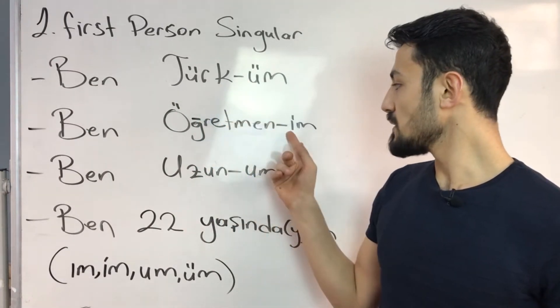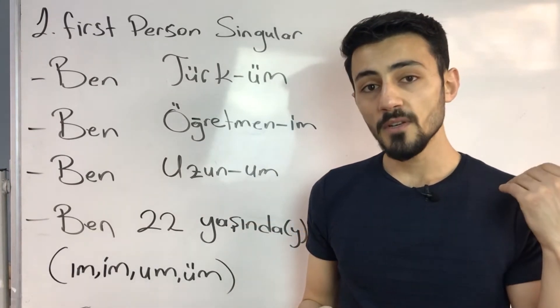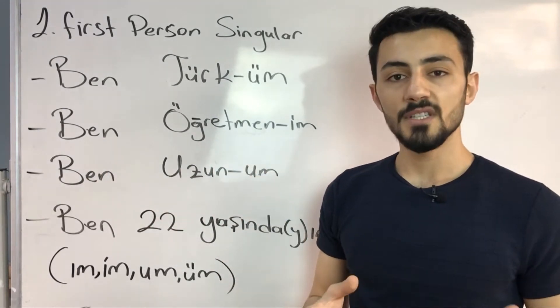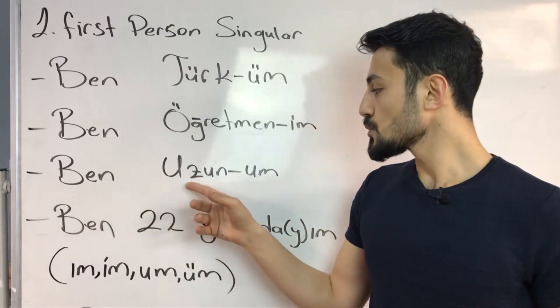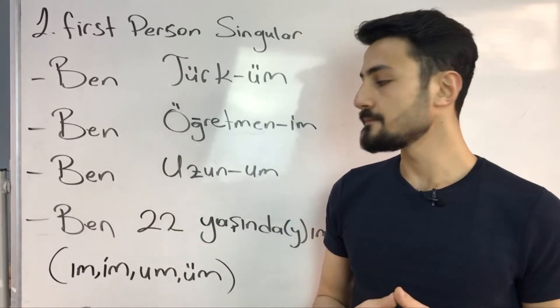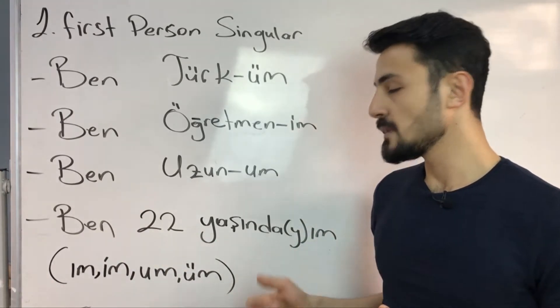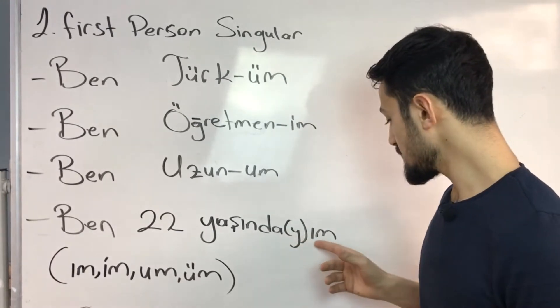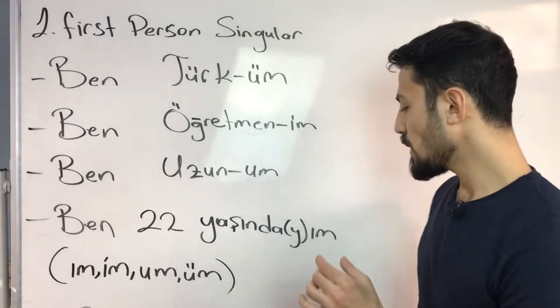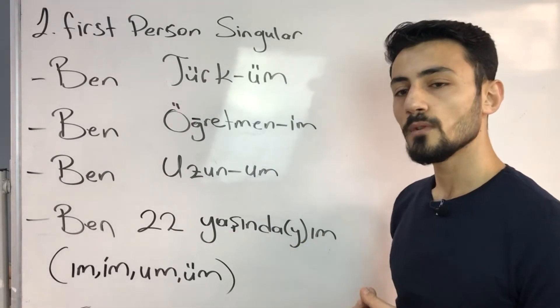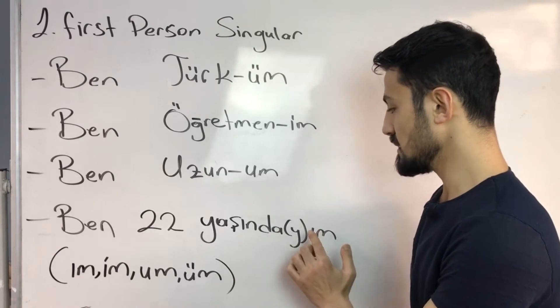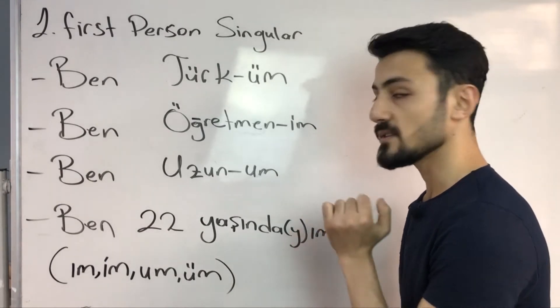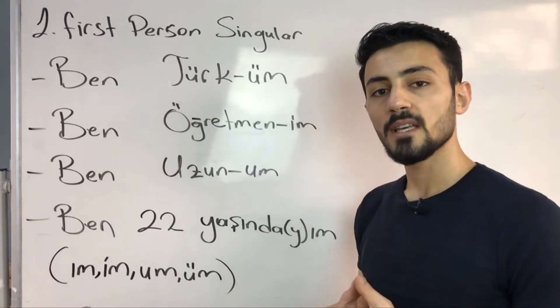If you wonder how these vowels are changing please watch my previous video about vowel harmony. Ben öğretmenim - I am teacher. Ben uzunum - I am tall. Ben yirmi iki yaşındayım - I am 22 years old. Last vowel is a and comes after ın. You may ask me why I put here y sound, because this is a rule, we don't put two vowels together, a and ı and other vowels don't come together, that's why we put here y sound. Keep it in your mind. I'm going to give more examples about this.